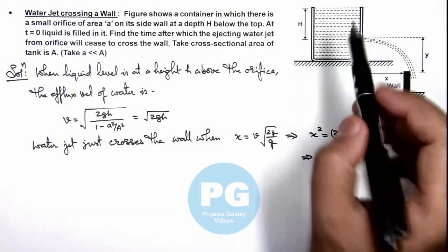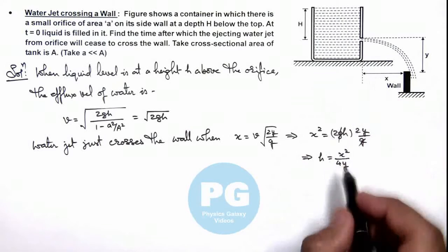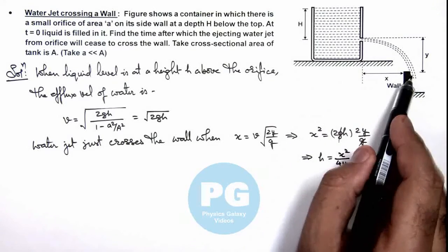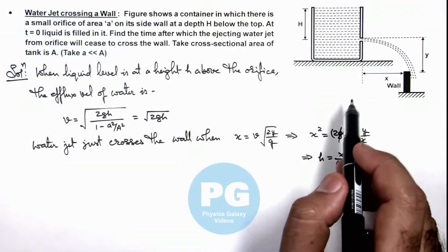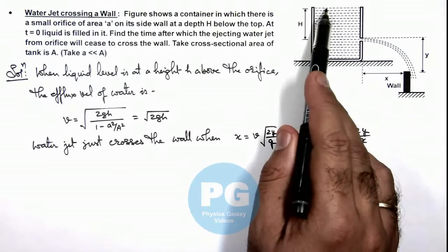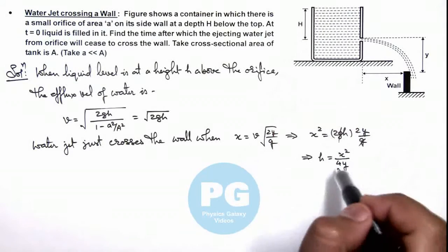So when the height above the orifice of water level is x²/4y, the water jet will just be crossing the wall. So we are required to find the time taken in falling the level of water from capital H to this small h.